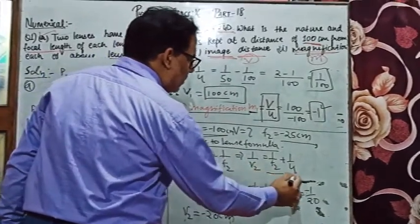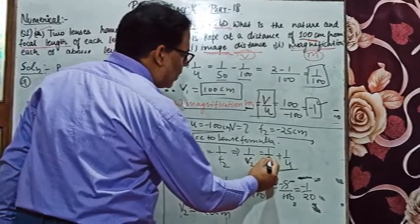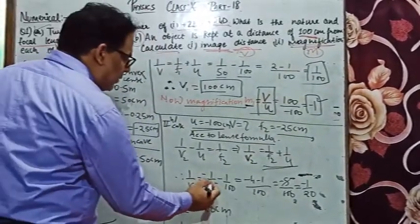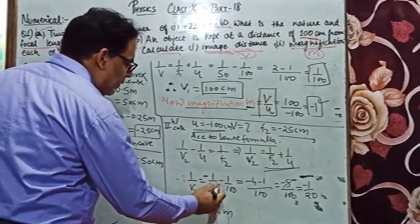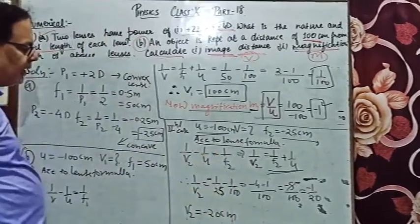We use the lens formula: 1/v = 1/f2 + 1/u. Now we have all values: 1/v = 1/(-25) - 1/100. In this case, we calculate the result.